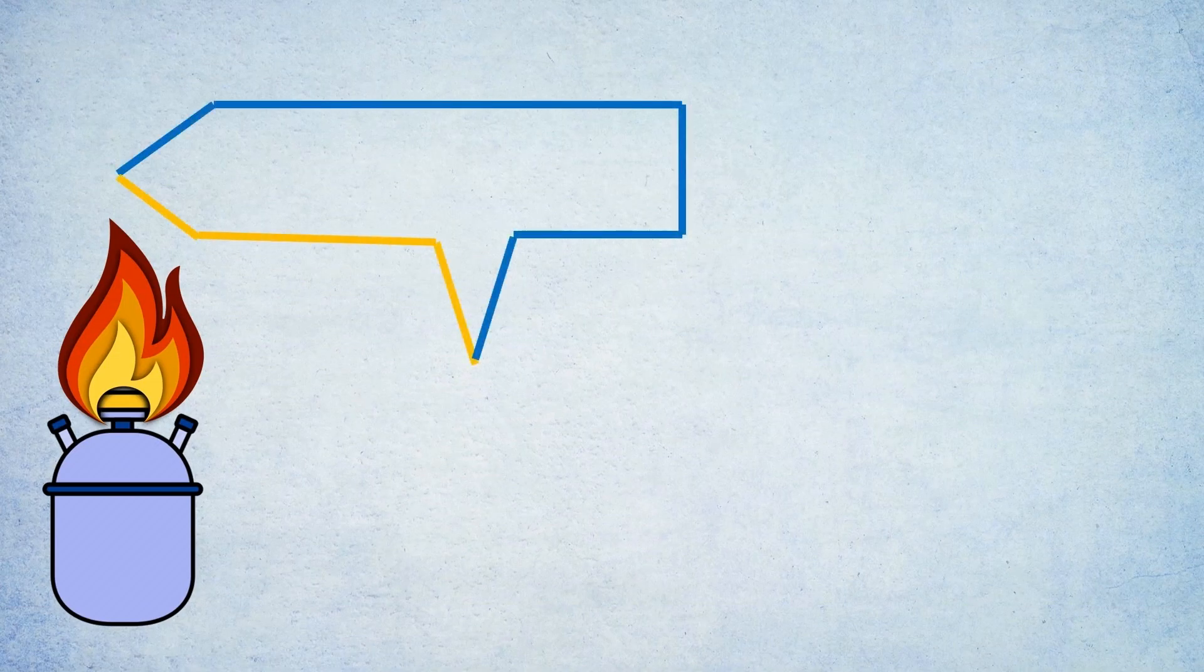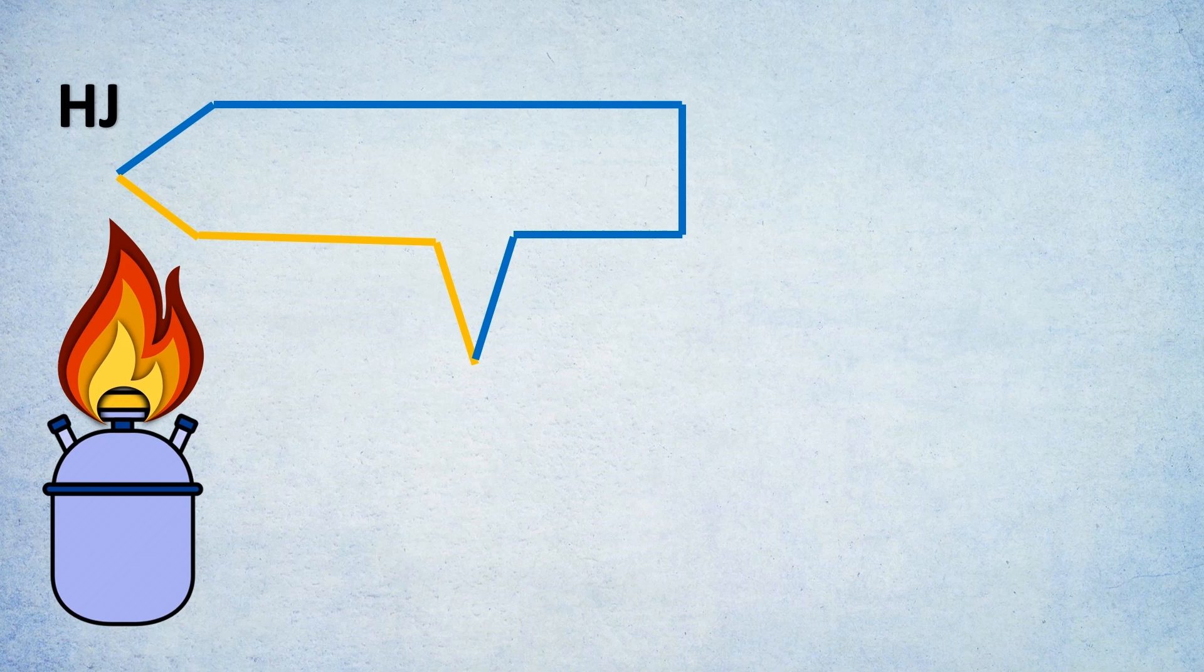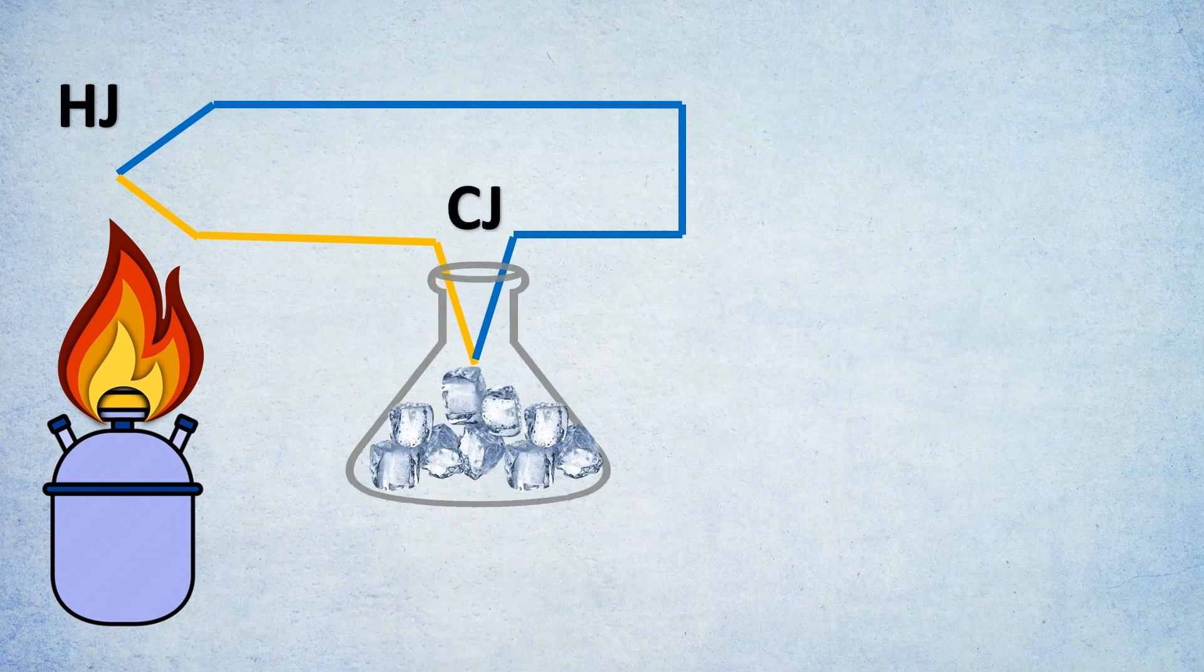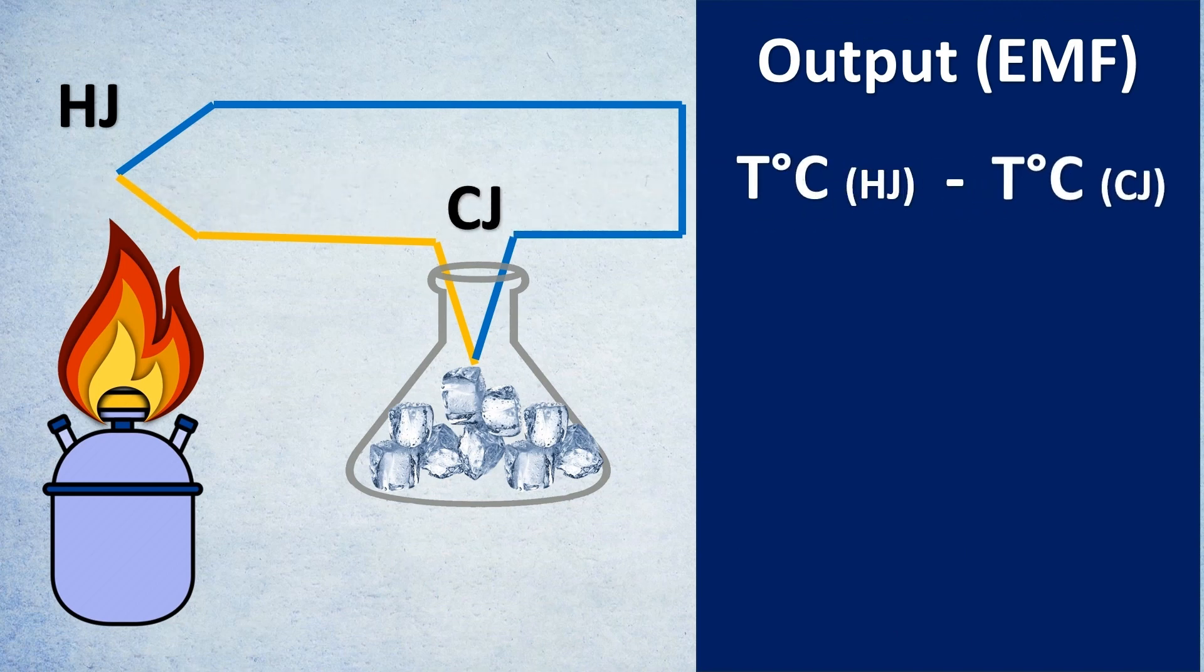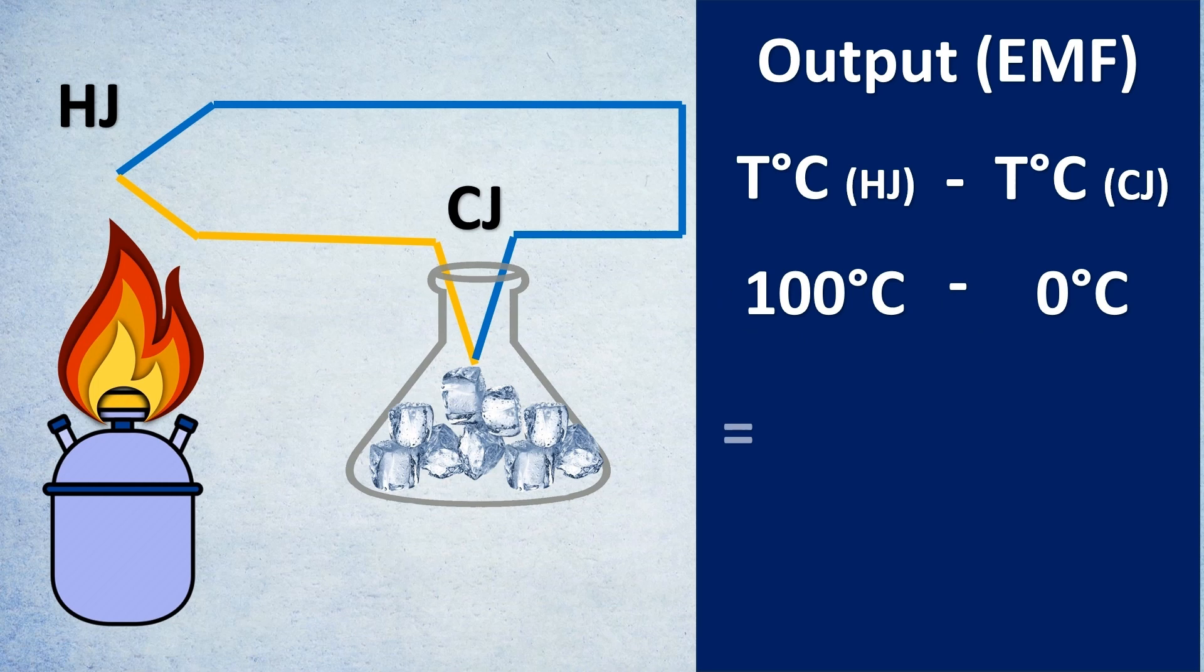For example here we want to know the heat. So here's the hot junction to it. Here's the cold junction which is put in an ice bath. Why? Because the output EMF is proportional to the difference between the temperature of the two junctions. So for example if you put the cold junction at 0 degree Celsius, the EMF would be corresponding only to the temperature of the hot junction. And that is how scientists would use this to measure in the laboratories.